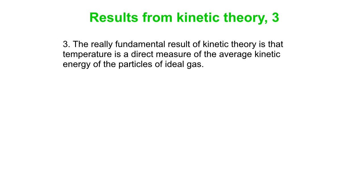Okay, here's a really important result. Number three, okay, the really fundamental result is what temperature is, and temperature is a direct measure of the average kinetic energy of the particles of ideal gas. Note that it's the average kinetic energy. So kinetic theory says PV is two-thirds of N times the average kinetic energy.